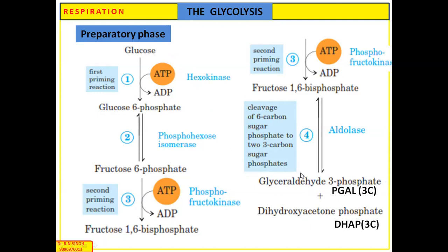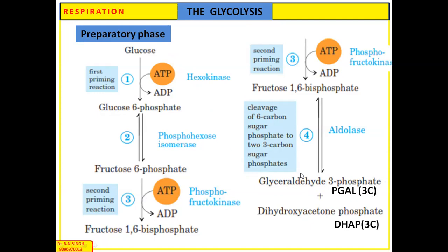The further reaction is carried out by glyceraldehyde-3-phosphate. In the fifth step, dihydroxyacetone phosphate is converted into glyceraldehyde-3-phosphate, because the further reactions of glycolysis are carried out by glyceraldehyde-3-phosphate, not by dihydroxyacetone phosphate. Therefore, we now have two molecules of glyceraldehyde-3-phosphate.